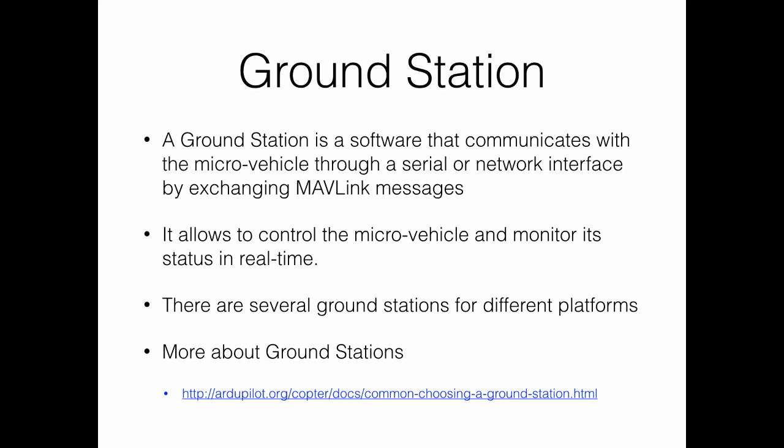First, what is a ground station? It is simply a software application that interacts and communicates in real time with a micro vehicle, such as a drone, by exchanging Mavlink messages. The communication can either take place over a serial port, generally through a telemetry device, or through a network interface inside a wireless local area network using the UDP or TCP protocol.